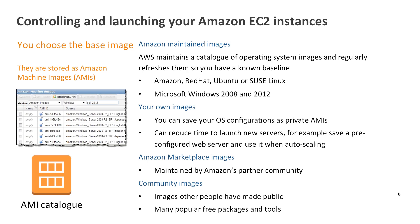When you are using Amazon auto-scaling, for example, and you want to spin up new web servers very quickly, you're probably going to do that from a pre-baked web server image that you've created to speed up how quickly you can auto-scale. We also have Amazon Marketplace images, which are pre-configured AMIs maintained by our partners, typically paid by the hour.